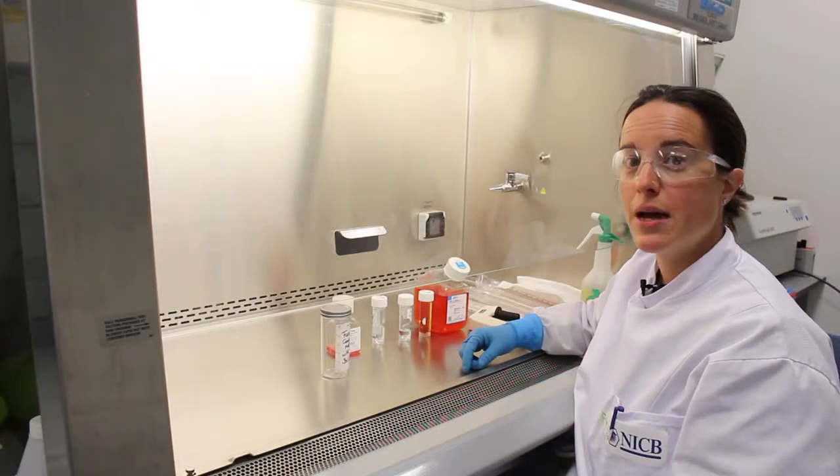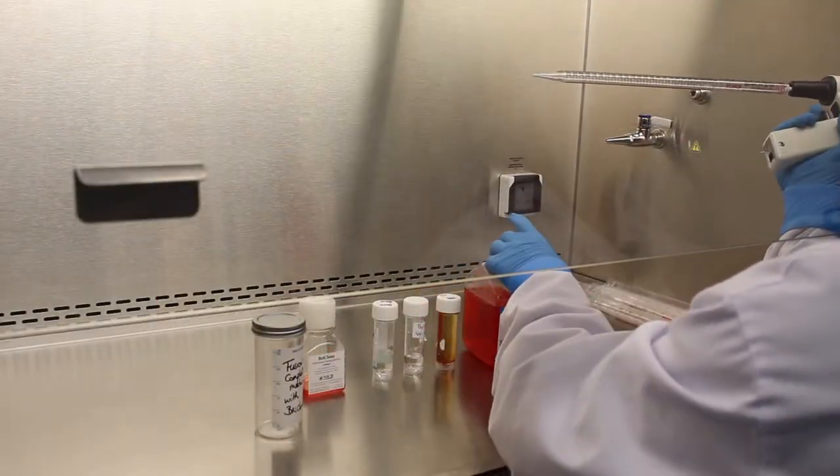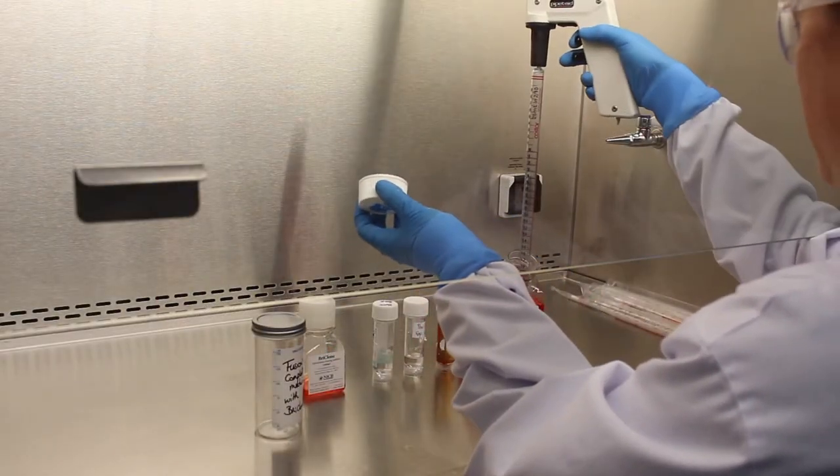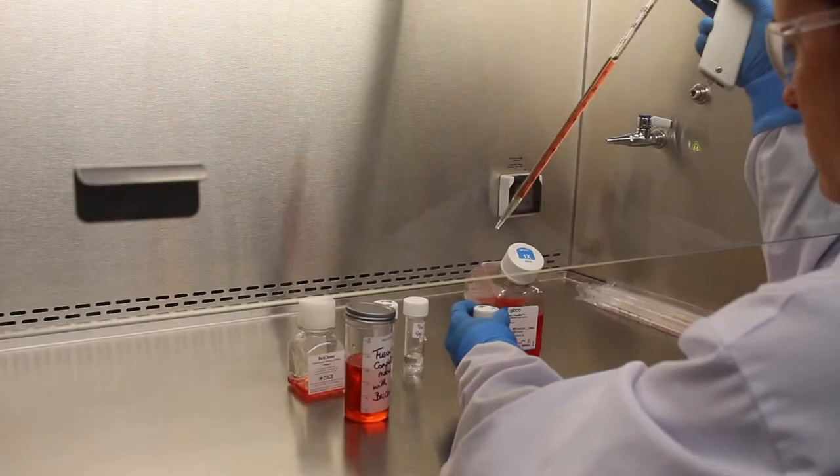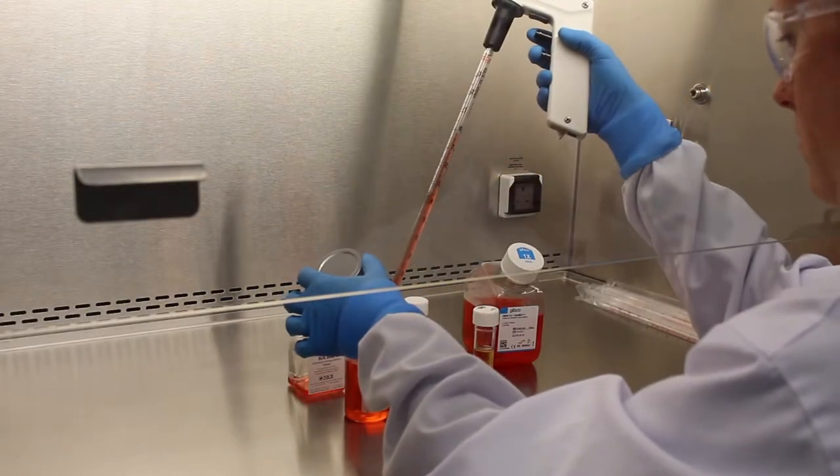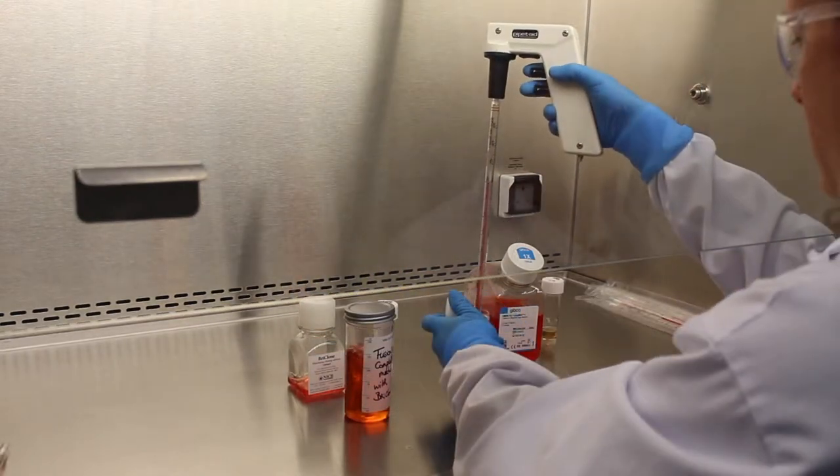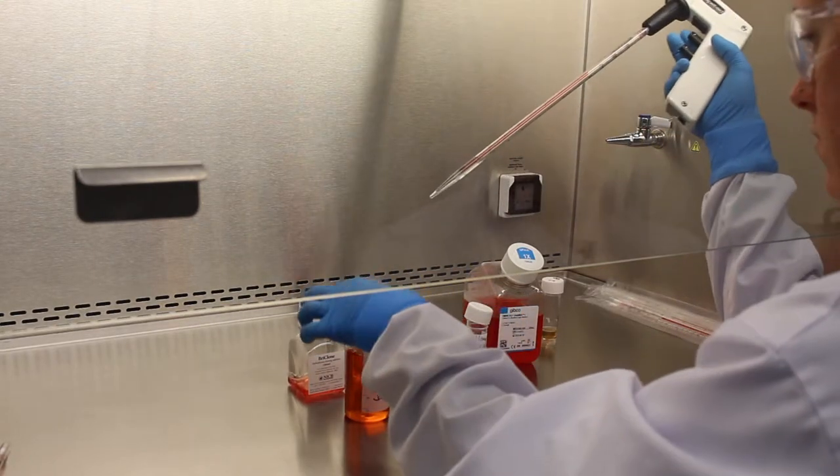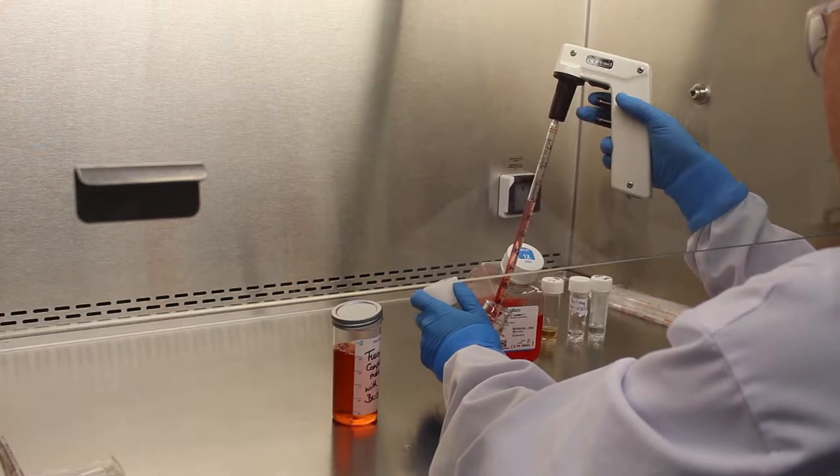So today I'm going to make up 200 ml of complete medium which is enough for two 48 well plates. First I'm going to transfer 175 ml of basal medium, then I'm going to add 20 ml of heat inactivated serum, then 2 ml of pen strep, 4 ml of HAT, and 10 ml of Bryclone because we use it at 5% concentration.